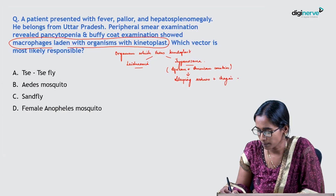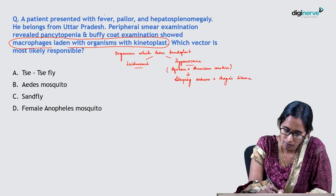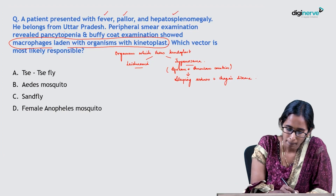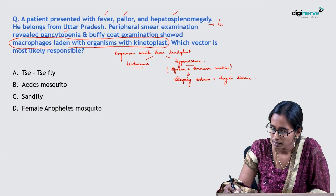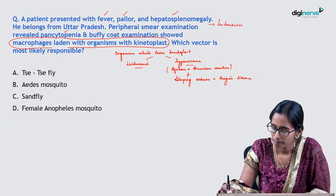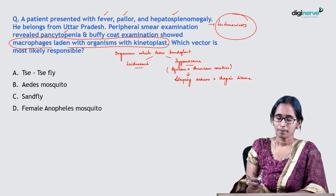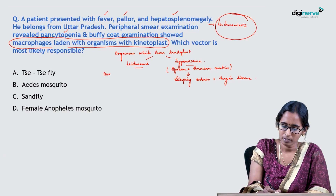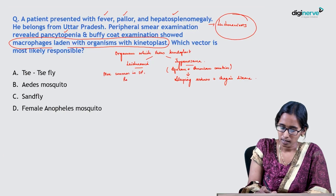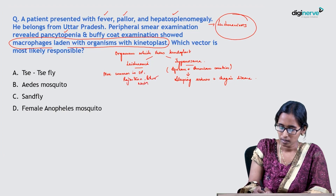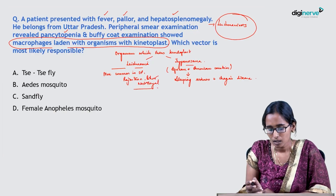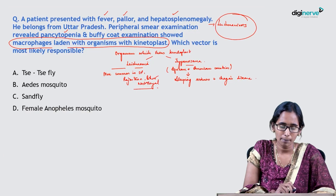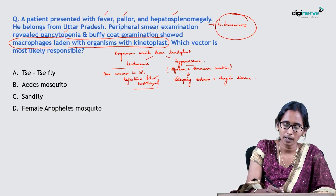In the history it is mentioned that the patient is having fever, pallor, hepatosplenomegaly and pancytopenia, which points towards the patient having leishmaniasis or kala azar. Kala azar is more common in Uttar Pradesh, Rajasthan, Bihar, and West Bengal.